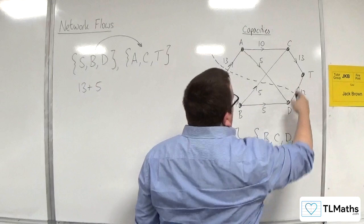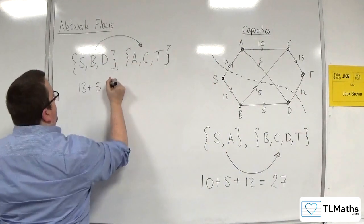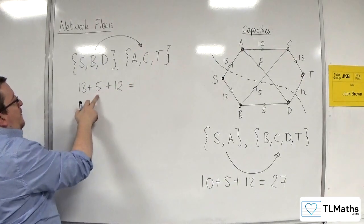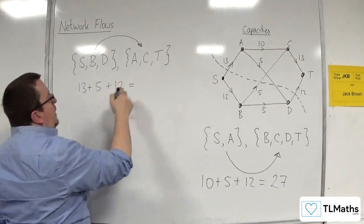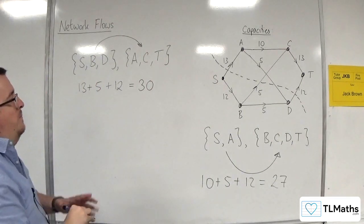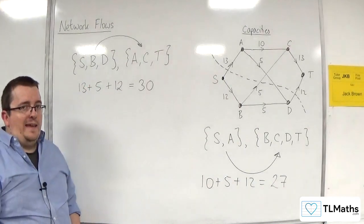And then we've got D to T, which is going from the source set to the sink set. So plus 12. So then we've got 13 plus 5 is 18. Plus 12 gets us 30. So this is how we can find the value of a cut.